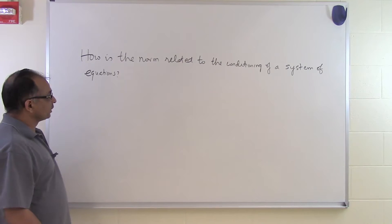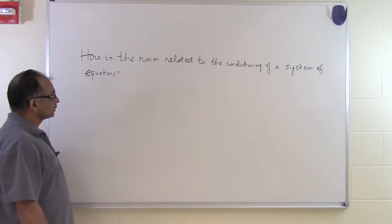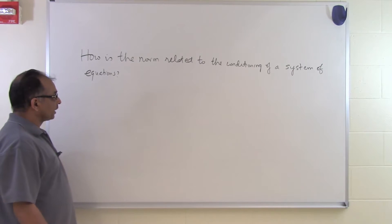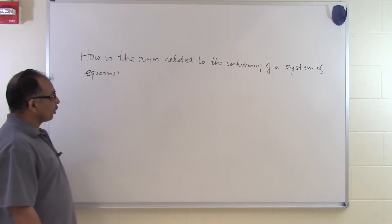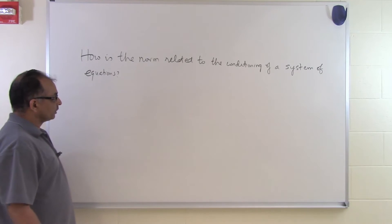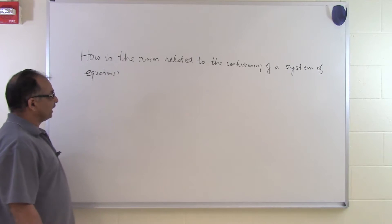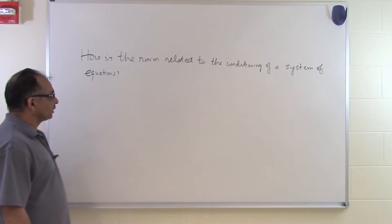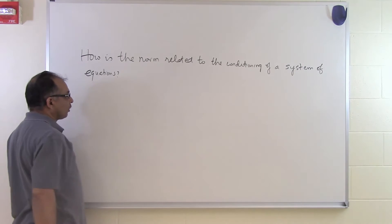In this segment we will talk about how the norm is related to the conditioning of a system of equations. In some of the previous segments we have talked about that if we have a certain system of equations and we make a small change to the coefficient matrix or the right-hand side, does it make a small change in our solution vector or a large change? If it makes a small change, we consider the system to be well-conditioned; if it makes a large change, we consider it ill-conditioned. We want to quantify this and see whether it is related to the norm of a matrix.